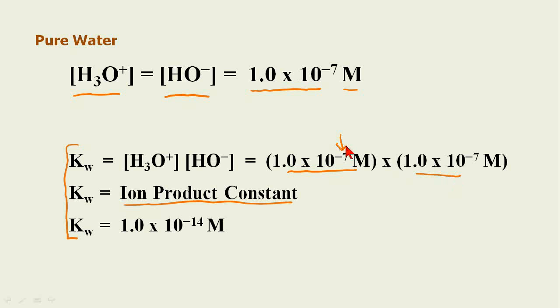The ion product constant, K sub W, is simply the hydronium cation concentration multiplied by the hydroxide anion concentration. These exponents are summed and we get the ion product constant is 1.0 times 10 to the minus 14 molarity.